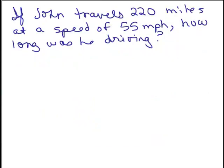So here's our first problem. If John travels 220 miles at a speed of 55 miles per hour, how long was he driving? All right, let's write down what we know. There should be a rate, a time, and a distance. One of them will be missing.